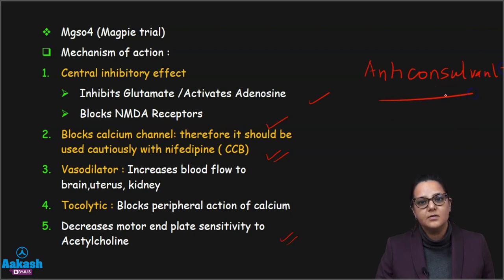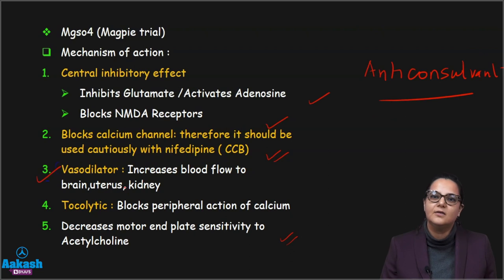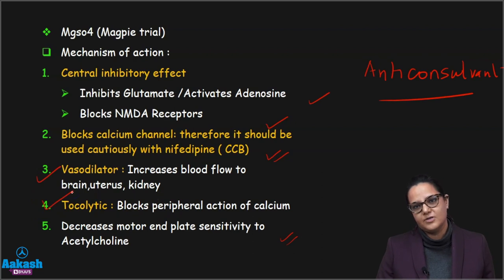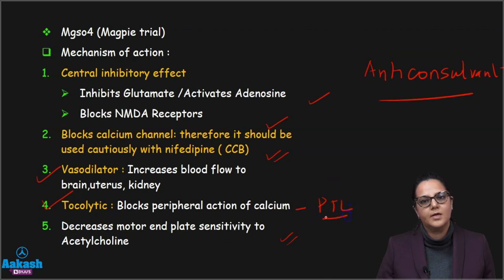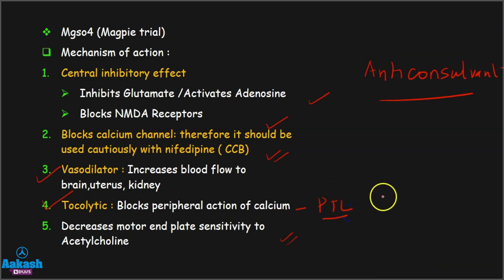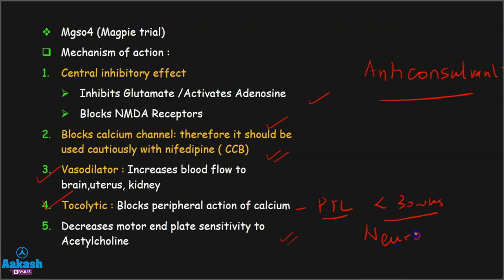Two additional features of magnesium sulfate: it is a vasodilator — it increases blood flow to the brain, uterus, and kidney. It is also a tocolytic because it blocks the peripheral action of calcium, so it can be used in preterm labor. It is also given in patients who deliver before 30 weeks of pregnancy because it has a neuroprotective effect for the baby.